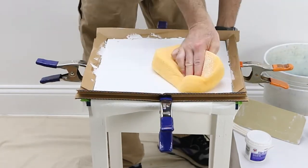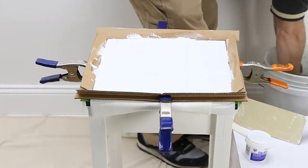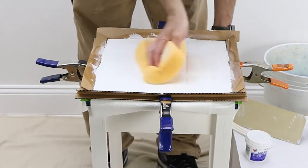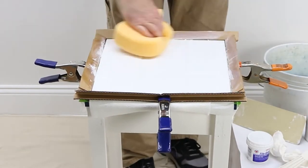Now, use a damp grout sponge to remove the rest of the surface grout and smooth out the joints. Change the water in the bucket as necessary.